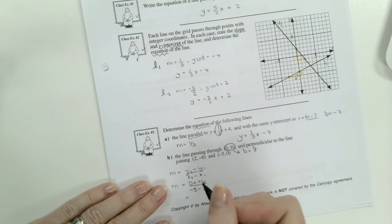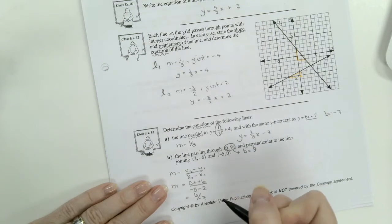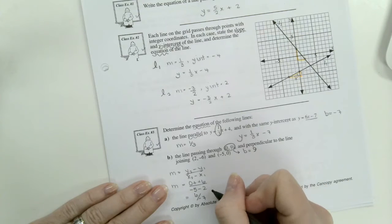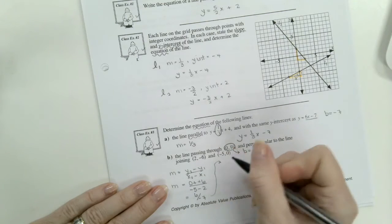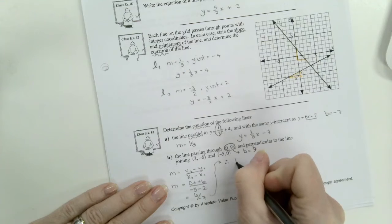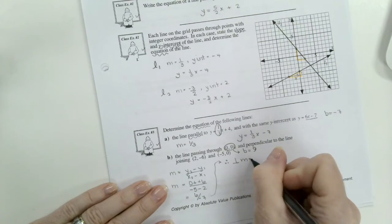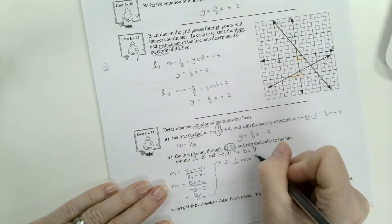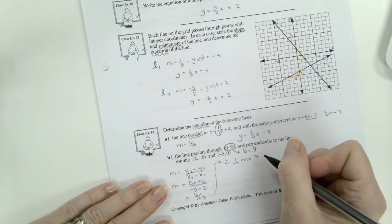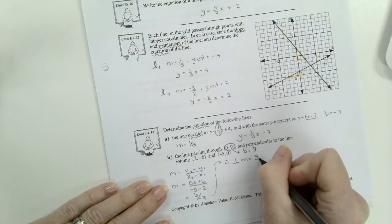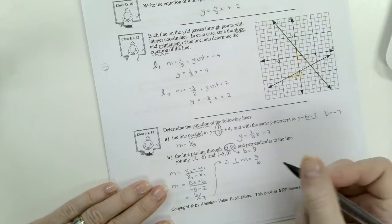Add the opposite. So we're going to get 6 over negative 7. And remember, that negative can go top, bottom, or middle. So now that's the slope of that point. Perpendicular, that's the symbol for perpendicular. Perpendicular slope is going to be the negative reciprocal, which means opposite sign of whatever was already there and reciprocal.